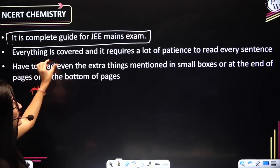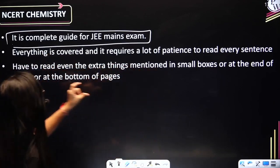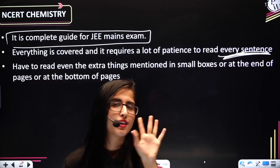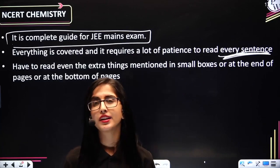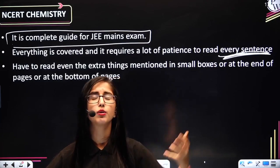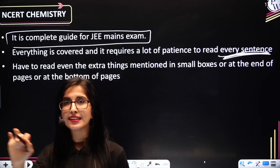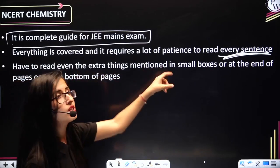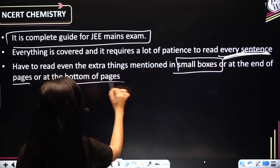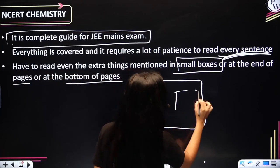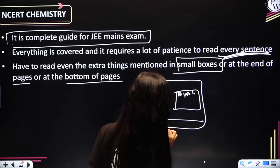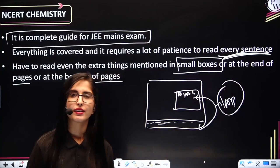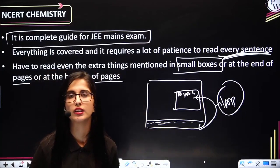You also need to read the extra things mentioned in small boxes, at the end of pages, or at the bottom of pages. When you see a page, a concept is introduced — the 'Do you know?' sections and small informational boxes. These are very important for JEE. If you skip these, you will miss many major questions that come in JEE exams from those sections. This is very important.